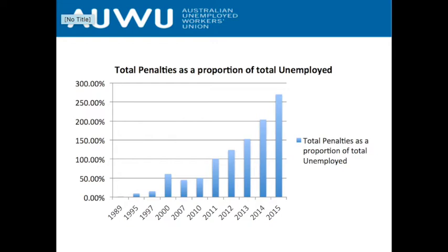If you're on the CDP you're 70 times more likely to be penalised than anybody else in a non-CDP program. The next graph shows penalties as a proportion of total unemployed — demonstrating this increase isn't just because unemployment is rising, but because penalties have exploded. Going by the data we've collected, in 2015 every unemployed person on average would be penalised two and a half times — compare that to 1989 when there were very few penalties.